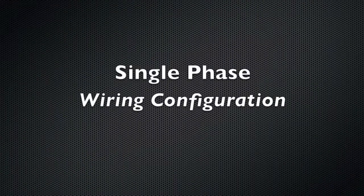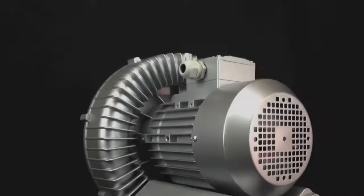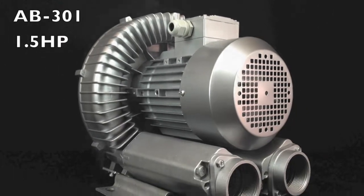Now we will go over single-phase wiring configurations using the AB301 1.5 horsepower blower.